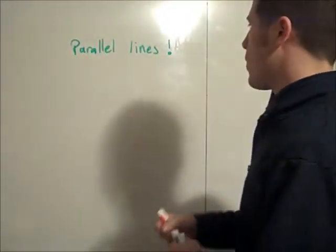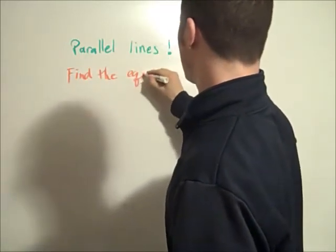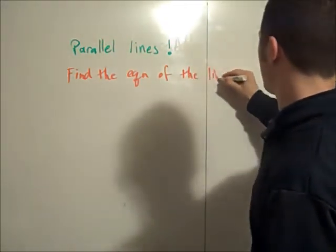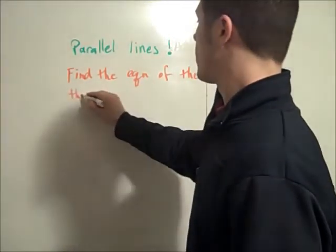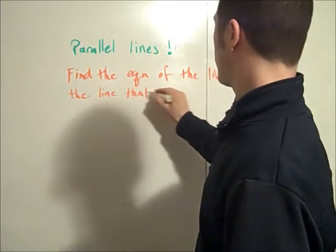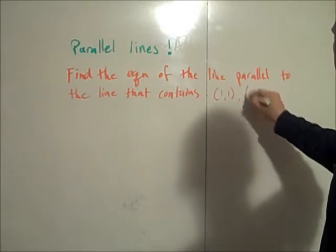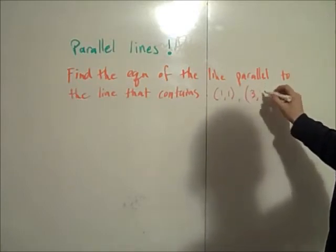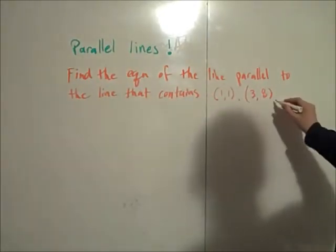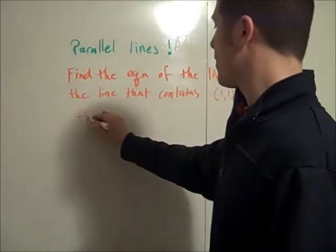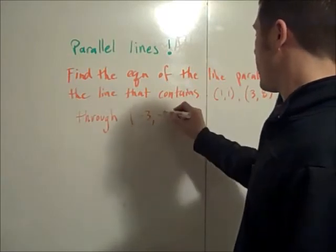So find the equation of the line parallel to the line that contains any two points—how about (1, 1) and (3, 8). So find the equation of the line that is parallel to the line that contains (1, 1) and (3, 8) but through (-3, -2).